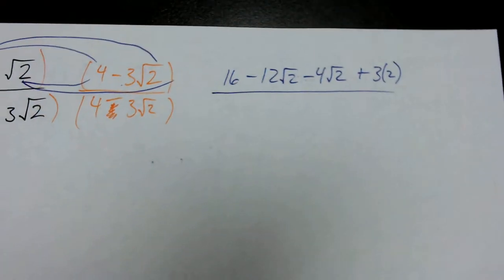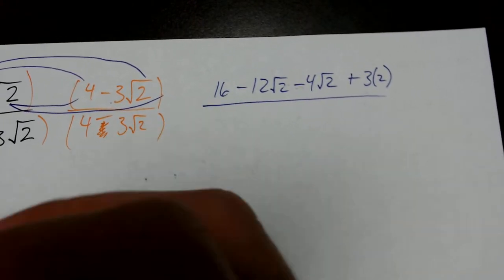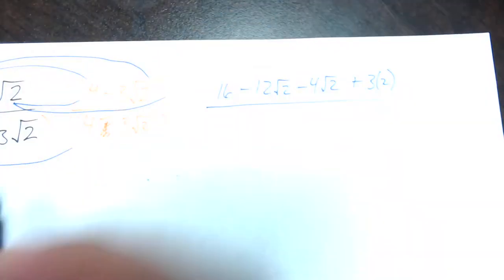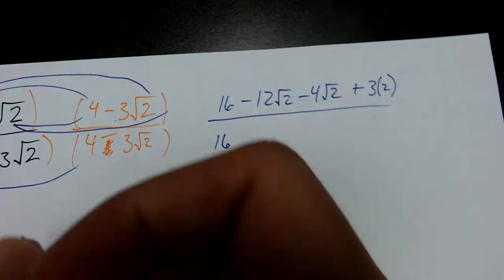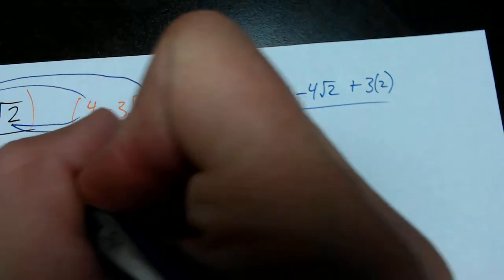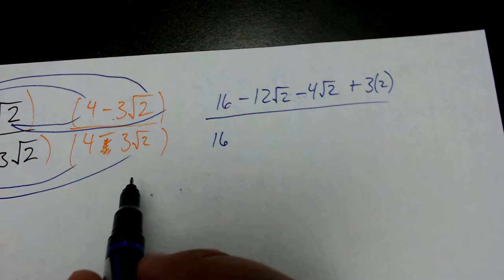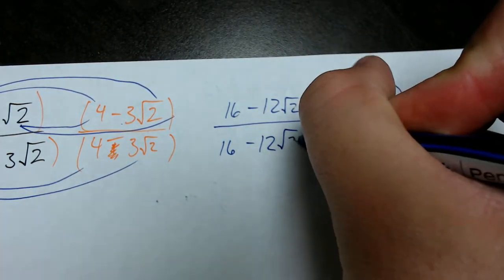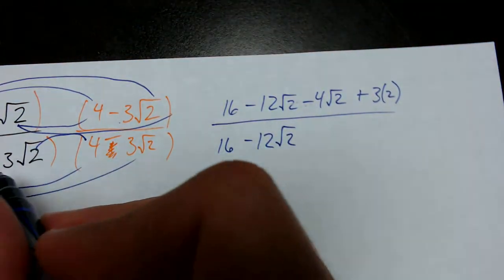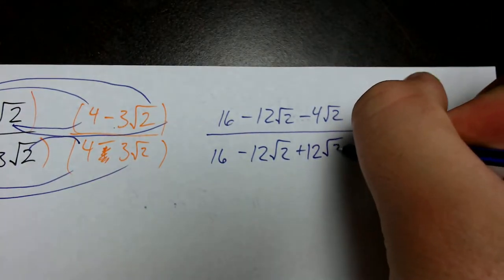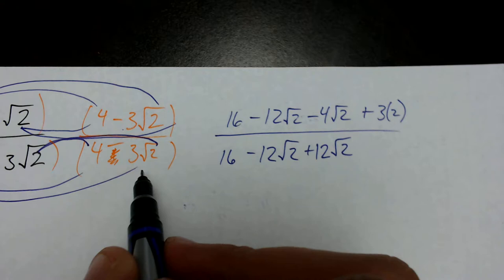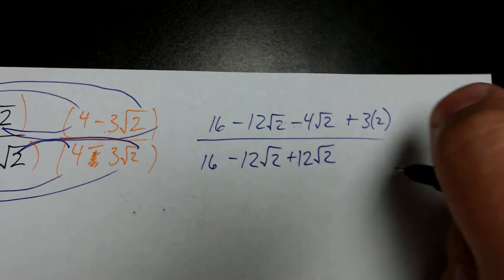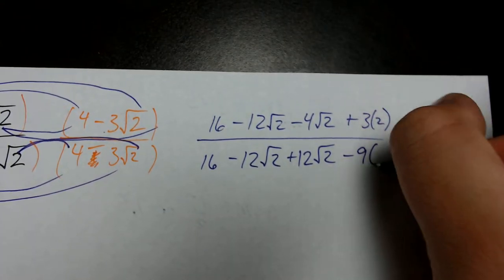For the denominator, FOIL: first times first gives me 16 again. Outside times outside: 4 times negative 3 root 2 gives me negative 12 root 2. Inside times inside: positive 4 times positive 3 root 2 gives me positive 12 root 2. Last times last: positive 3 root 2 times negative 3 root 2 gives me negative 9 times 2.